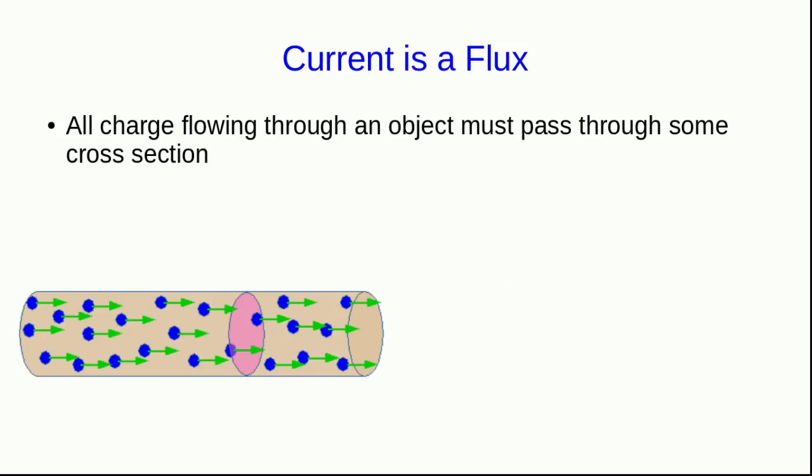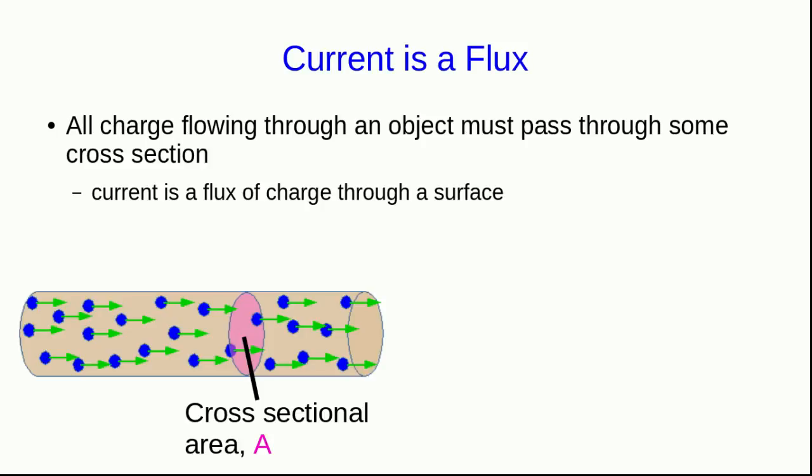So when current is flowing in an object, that means charged particles are moving, and for any object with charged particles moving through it, we can define cross-sectional areas that all of those particles must move through. And so we're talking about motion of objects through some cross-sectional area. This is a flux. Current then is a flux of charge through a surface, whereas electron current is a flux of electrons through a surface.